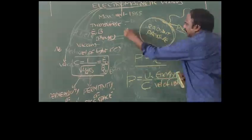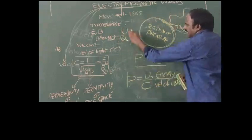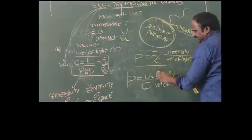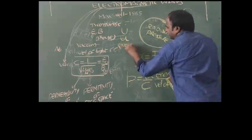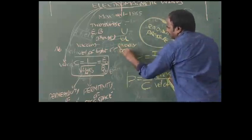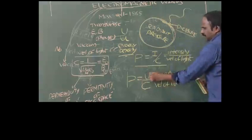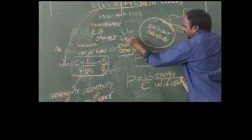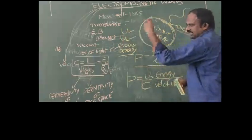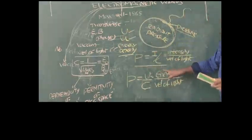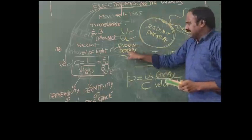There is a difference between capital U and small u. Capital U indicates energy, while small u indicates energy density. You should note carefully that capital U and small u are different — capital U indicates energy and small u indicates energy density.